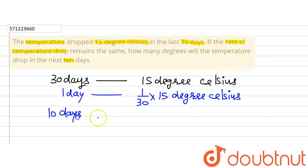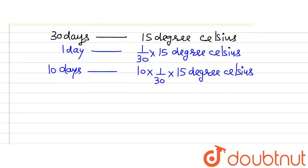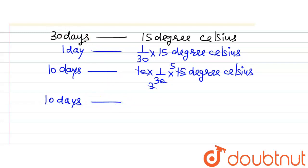In the next 10 days, how much temperature will drop? Multiplying by 10, we get 10 multiplied by 1/30, giving us 1/3, and this 3 divides 15 to give us 5. So in 10 days there will be a drop of 5 degrees Celsius.